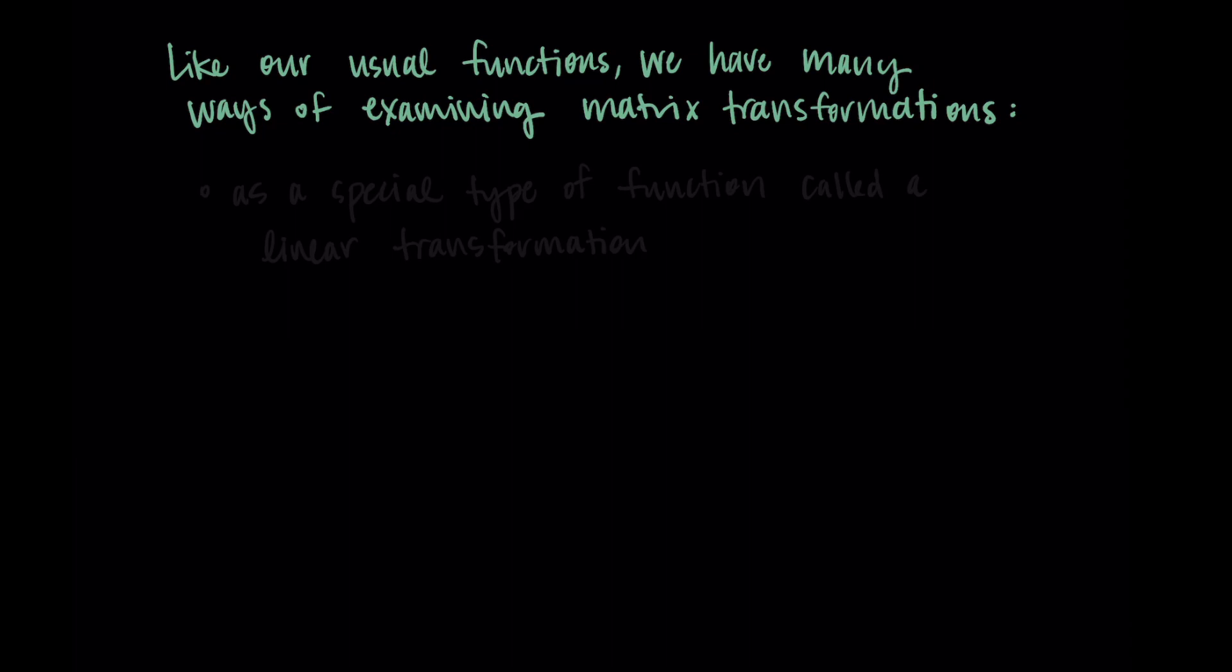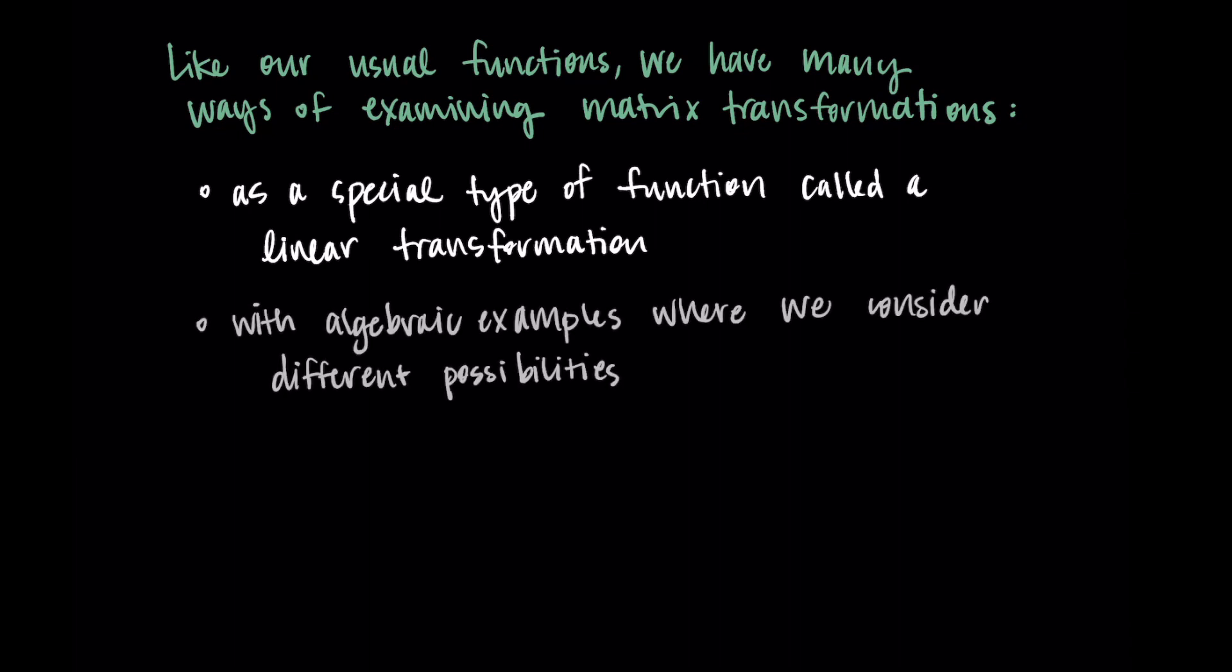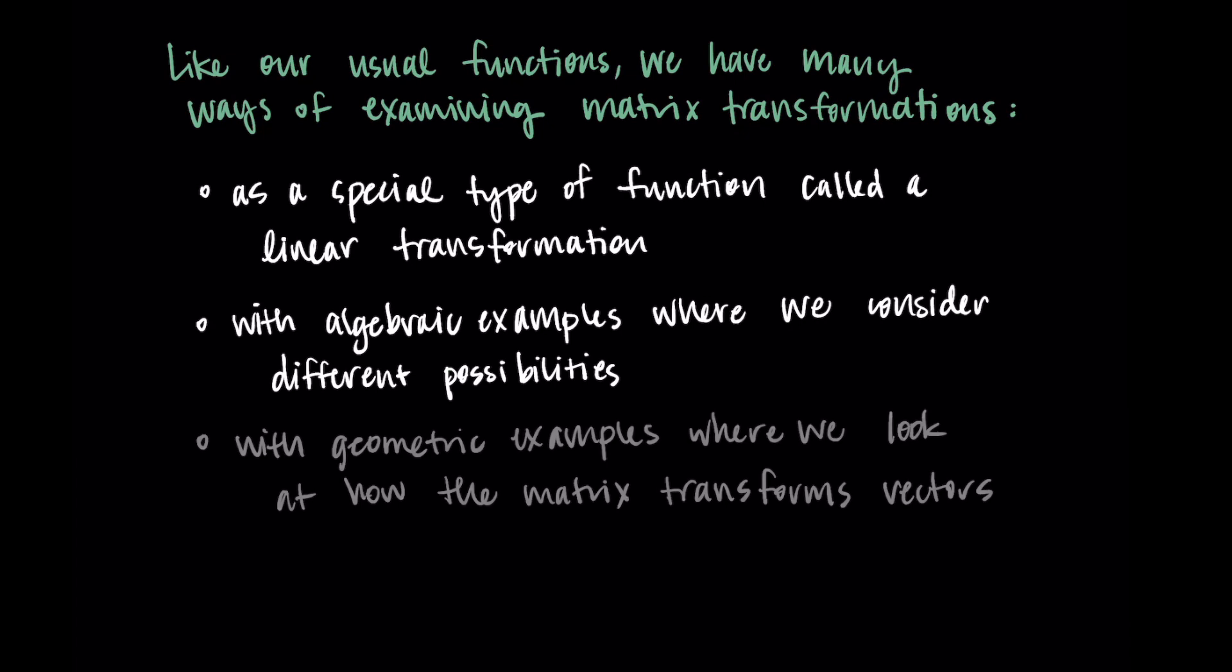One of the things we're going to do is to classify matrix transformations as a special type of function called a linear transformation. We'll also go through some algebraic examples where we consider the different possibilities for what the transformations might look like algebraically. And we'll go through some geometric examples where we'll consider how the matrix transforms vectors in a graphical way.